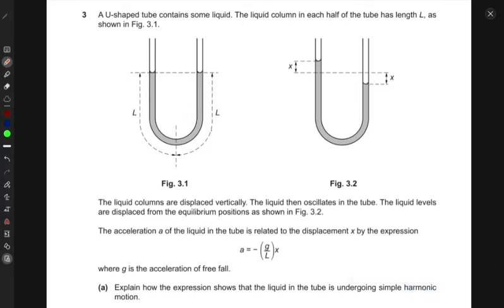The liquid columns are displaced vertically. The liquid then oscillates in the tube. So it goes up, this one goes down, and then this one goes up, and this one goes down. That's oscillation.